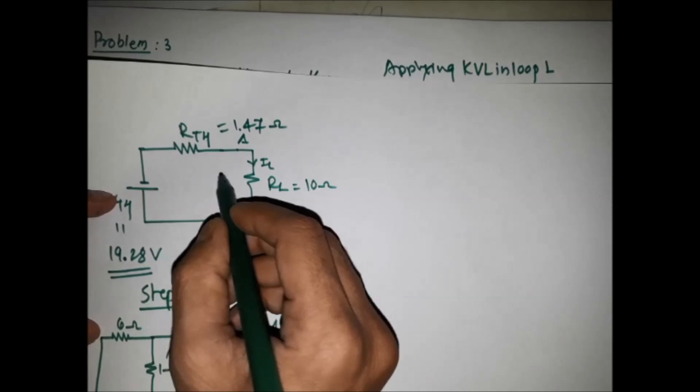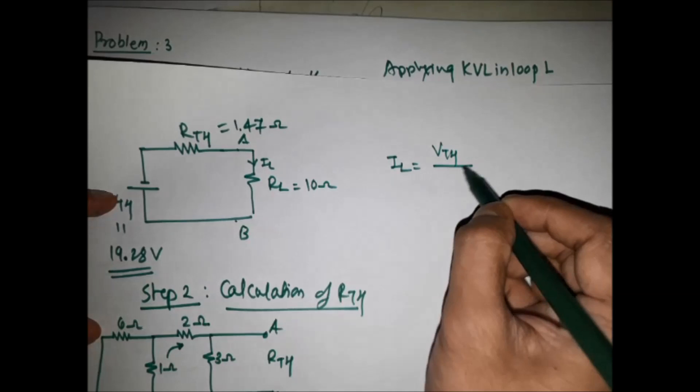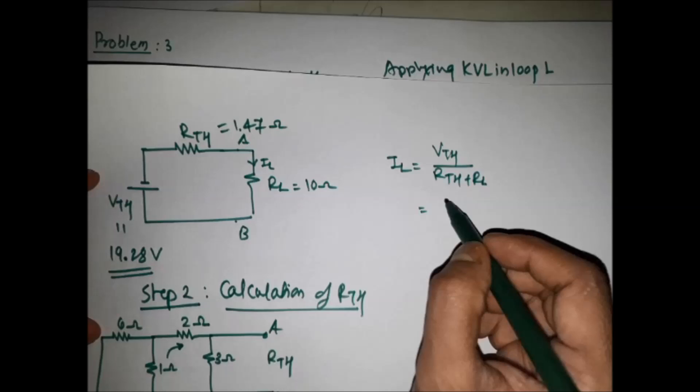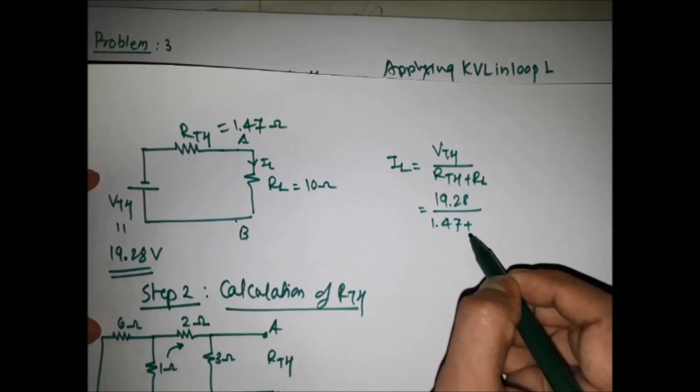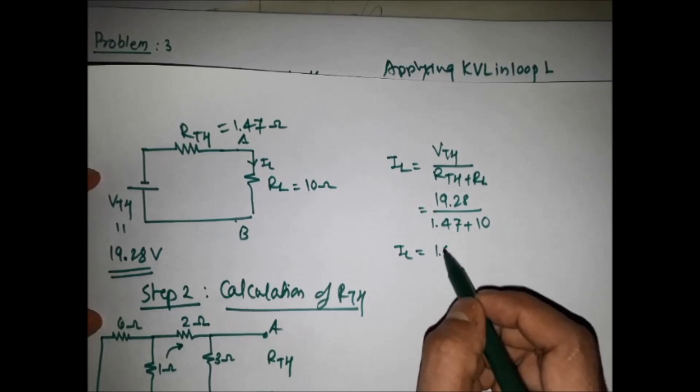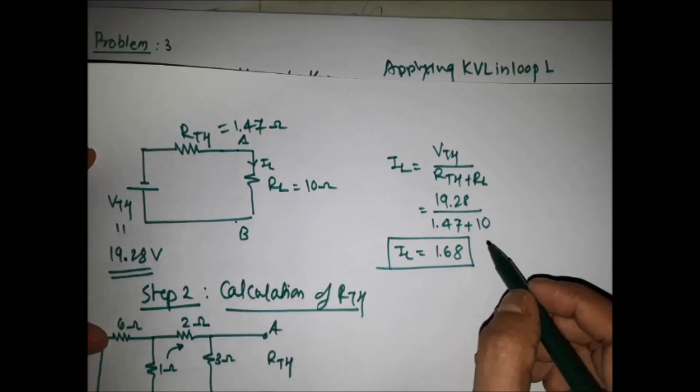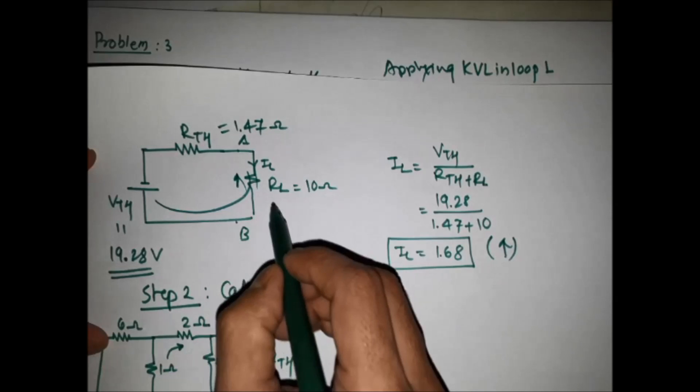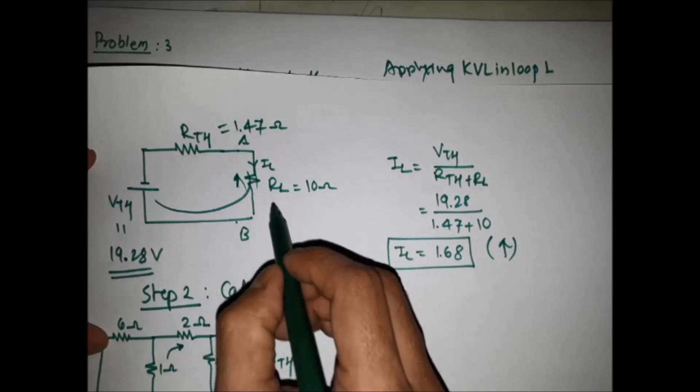The value of RTH is 1.47 ohms and RL is 10 ohms. Applying KVL in the Thevenin equivalent loop, the load current is IL = VTH / (RTH + RL) = 19.28 / (1.47 + 10) = 1.68 amperes. This is the final answer. The direction of this current will be upward through the load resistor.